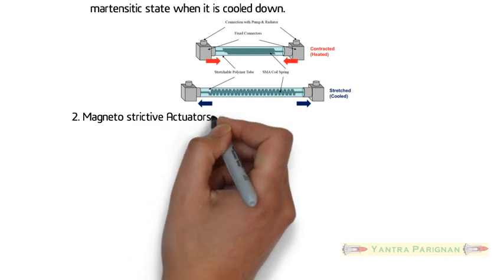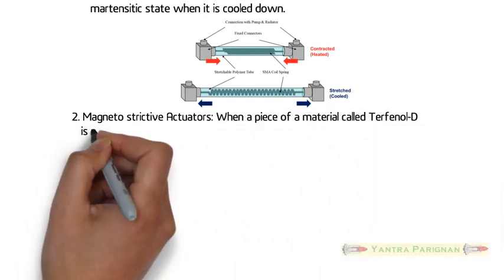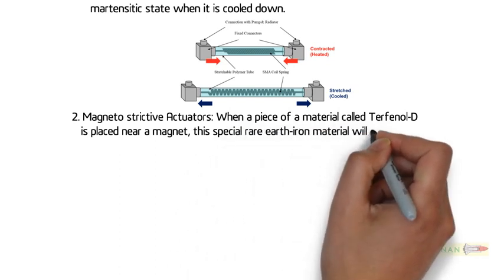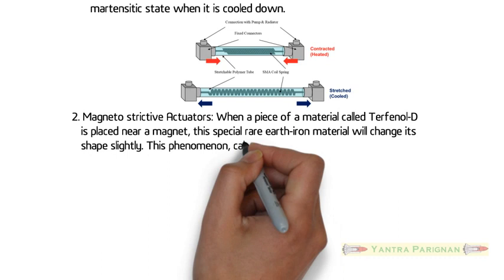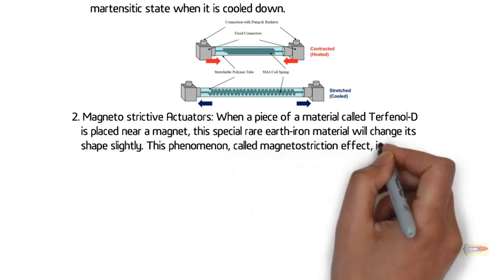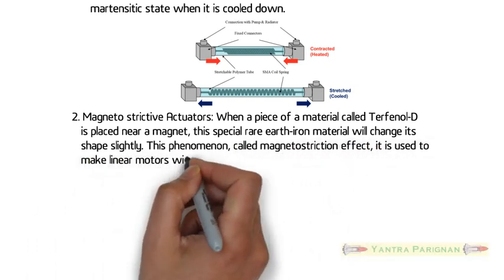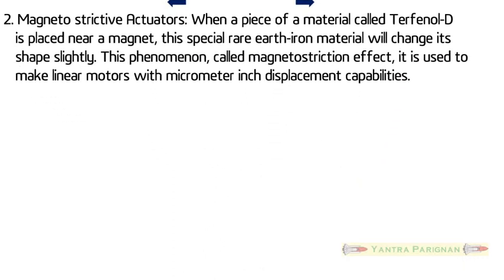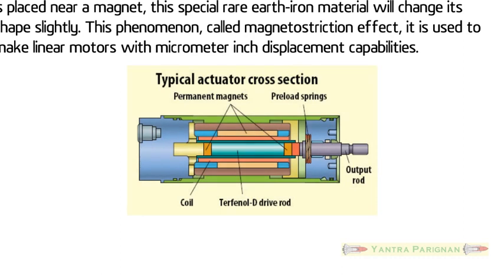Magnetostrictive Actuators. When a piece of a material called terfenol-D is placed near a magnet, this special rare earth iron material will change its shape slightly. This phenomenon, called magnetostriction effect, is used to make linear motors with micrometer-inch displacement capabilities. Figure shows the magnetostrictive rod covered by a magnetic coil attached to two chassis. As the magnetic field changes, causing the rod to contract and expand, one chassis moves relative to the other.